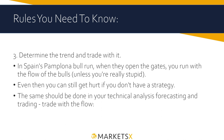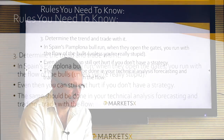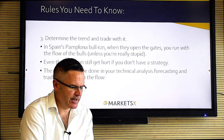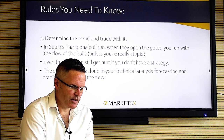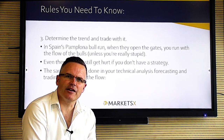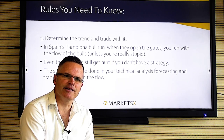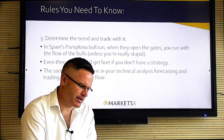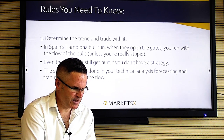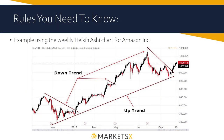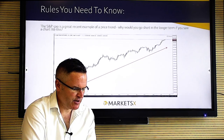Rule three: determine the trend and trade with it. I use the Pamplona bull run as an analogy — if you're clever, you run with the bulls, not into them. That's like going with the flow of money in the market. The rule is: find out what the trend and flow is, then go with it. Here's a chart of the S&P 500 — a great recent example of a price trend. Why would you want to go short of that chart? You'd always be buying it.